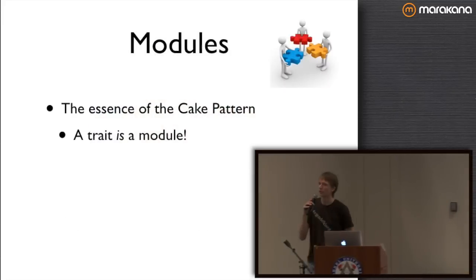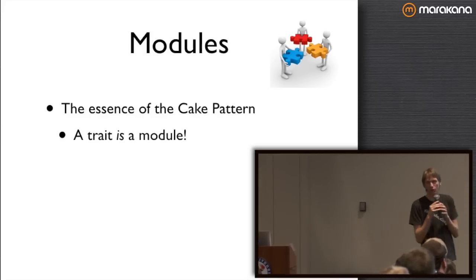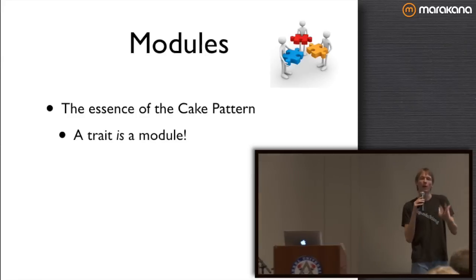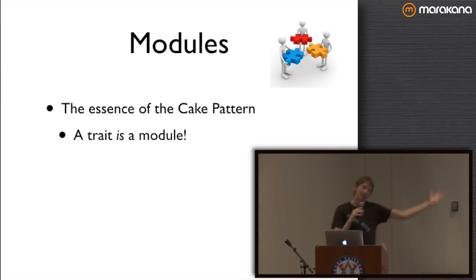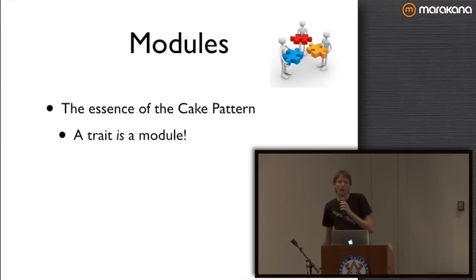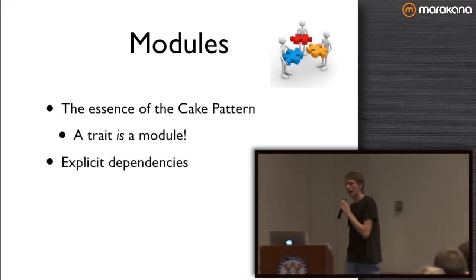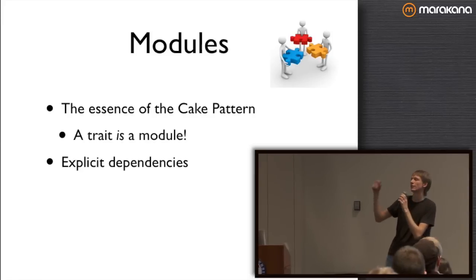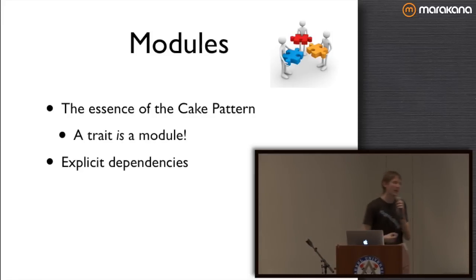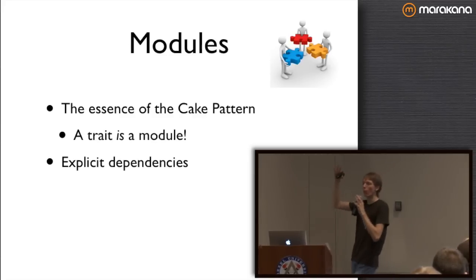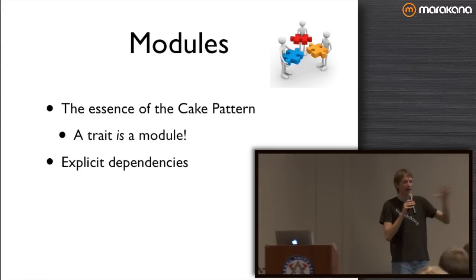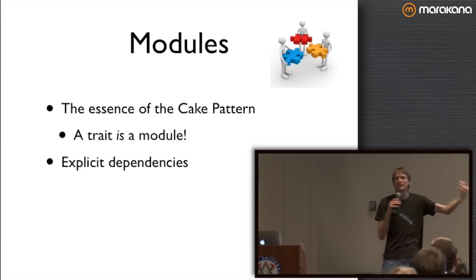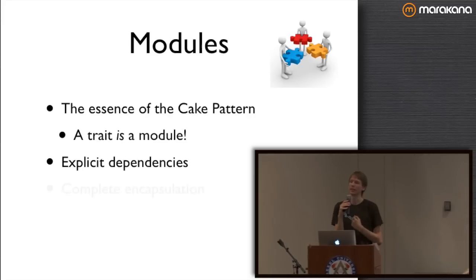The essence of the cake pattern is a module — a trait is a module. We're going to assume we have transcended the realm of packages, because packages are terrible. Traits are much more powerful: they're composable and controlled. Packages just stick prefixes on names. Traits are true modules. Unlike packages, traits allow you to have explicit, type-checked dependencies. You can't look at the outside of a package and see all imports, and you can't compose packages to change what was imported. Explicit dependencies with traits give us that flexibility and power.